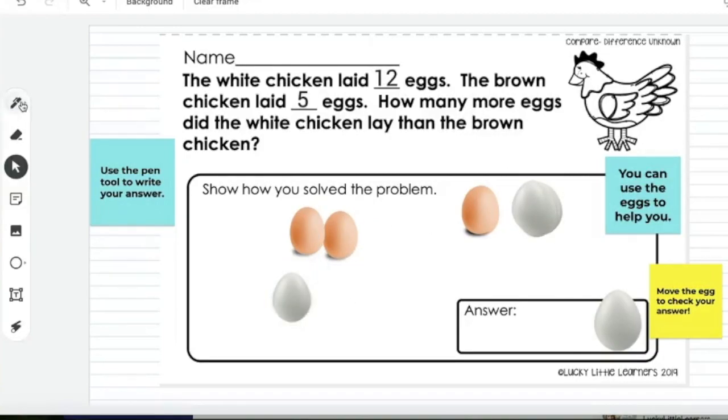They can take their pen. And if they're going to do subtraction, they can cross off eggs. There we go.